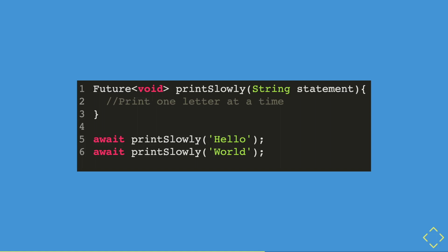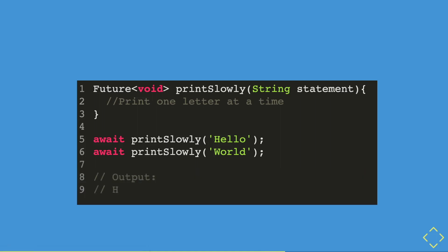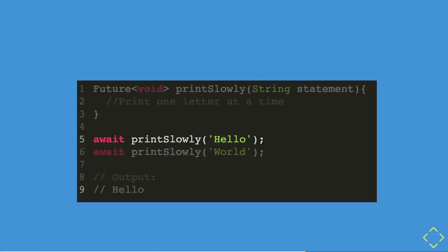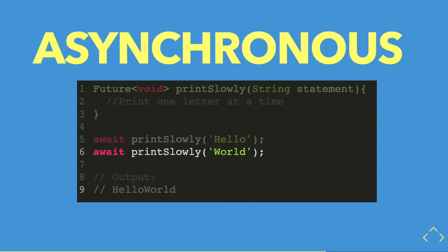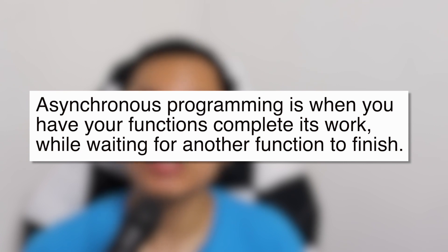With this future and await syntax, you could see that the output is what you will expect. The first function to run will be print slowly with the hello string. Once it finishes printing, then the next print slowly function with the world string will print next. Asynchronous programming is when you have your functions complete their work while waiting for another function to finish.